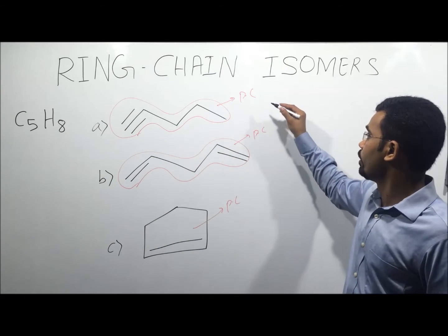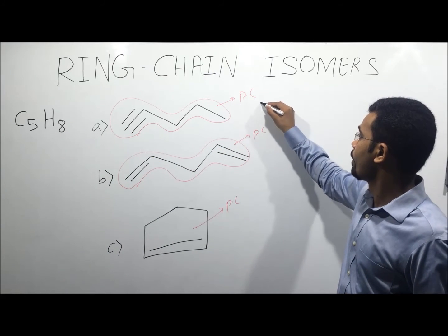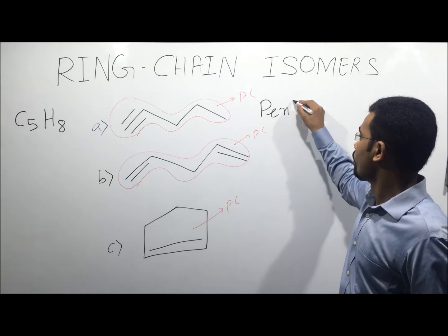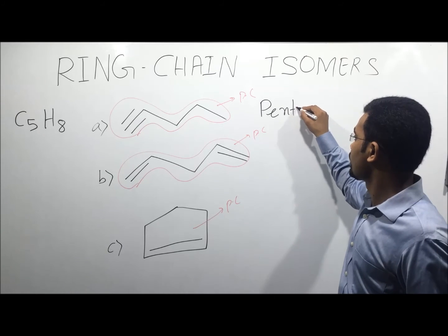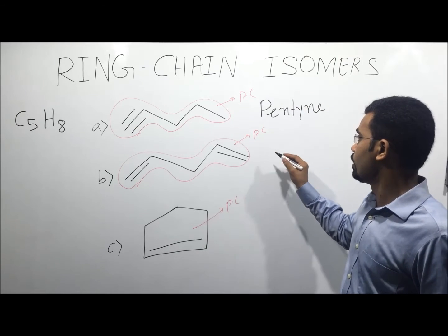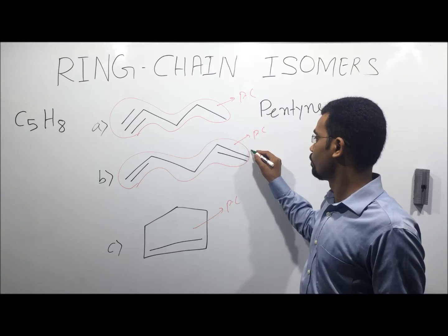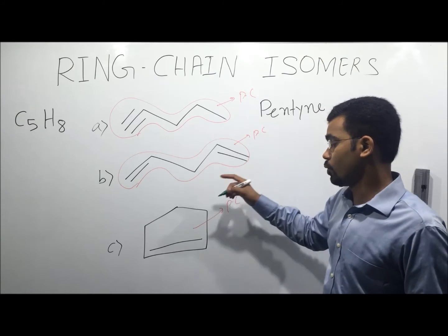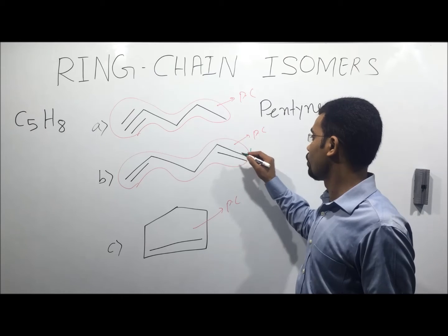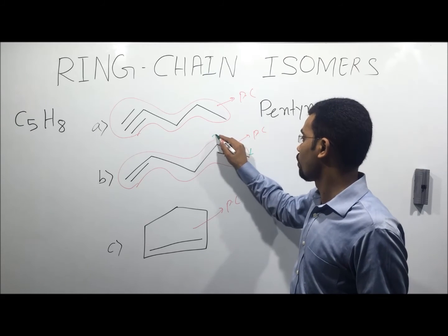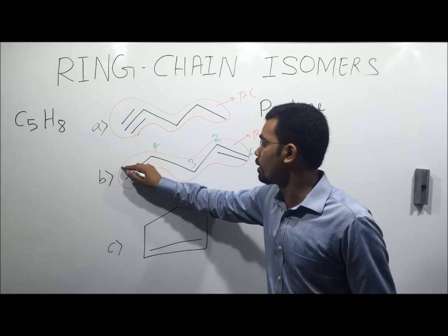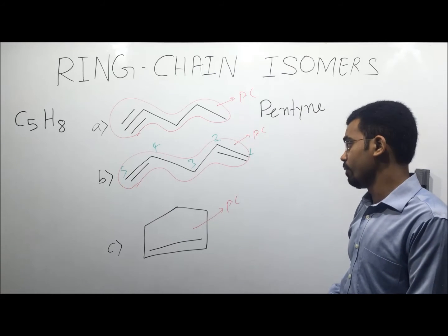This is considered A, this is B, and this is C. The name of A will be pent-1-ene, while the name of B — numbering from either side gives 1, 2, 3, 4, 5 — so the name of B will be pent-2-ene.